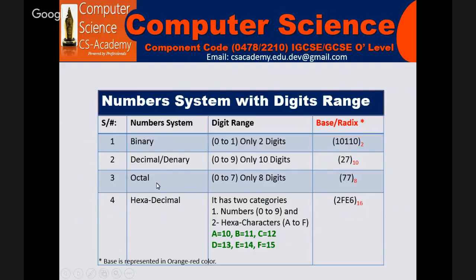Now the third one is the octal, which has 8 digits from 0 to 7. The maximum digit in octal is 7, and you can see that the base is represented by 8.